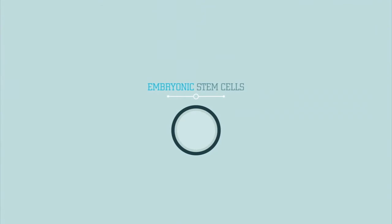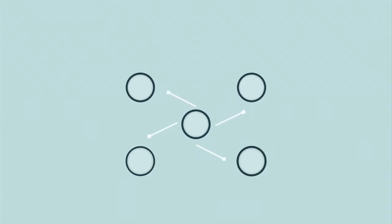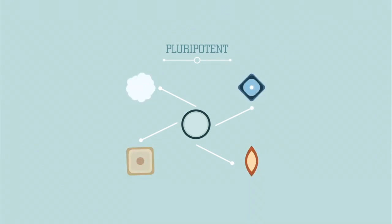Embryonic stem cells are created from leftover embryos that are willingly donated by patients from fertility clinics. Unlike tissue-specific stem cells, embryonic stem cells are pluripotent. This means that they can be grown into any kind of tissue in the body.